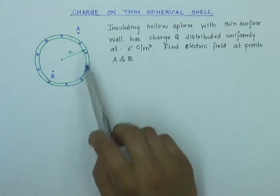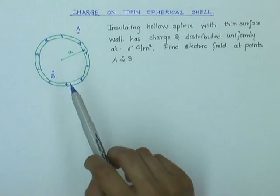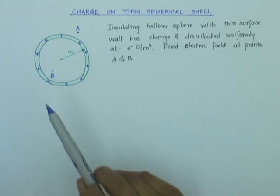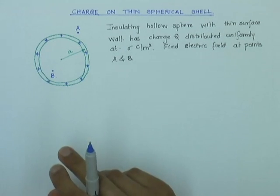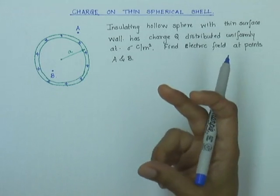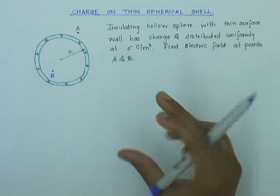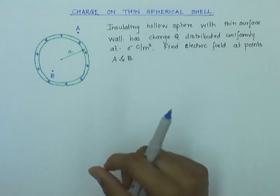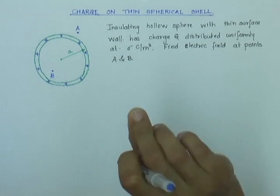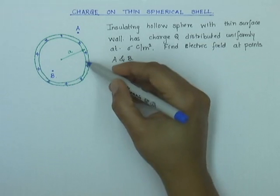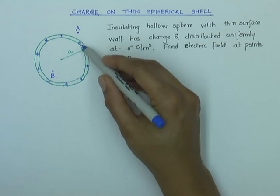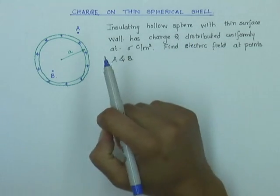In this problem we will look at the electric field due to a hollow sphere made up of insulators with a thin surface wall. You can think of plastic balls which are hollow from inside, made up of plastic which is an insulating material, and the wall of these plastic balls is pretty thin. Though we show a thick wall here, you should assume that this thickness is really very small.